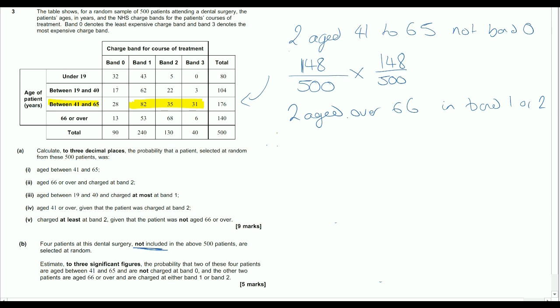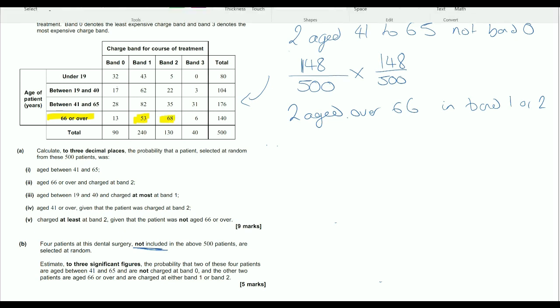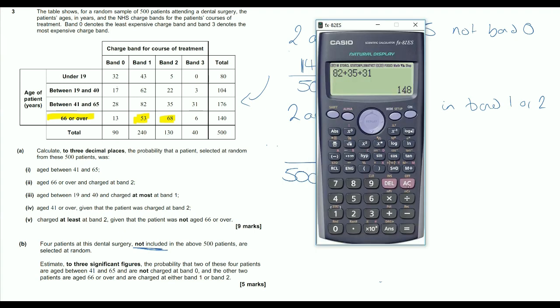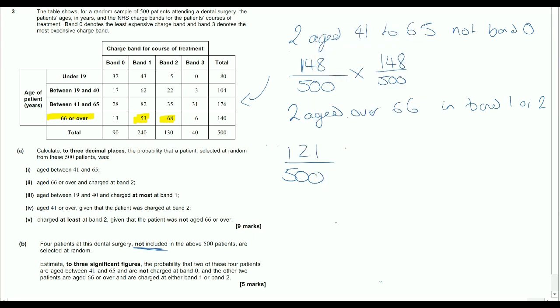So that's the probability of the first two people sorted. So they're aged 41 to 65 and not in band zero. Now two people aged 66 and over in band one or band two. So looking again, changing it now, we're 66 or over in band one or in band two. So again, it's not conditional probability, so we're out of 500. And it's going to be the 53 plus the 68, 121. And again, we've got a couple of those going on.